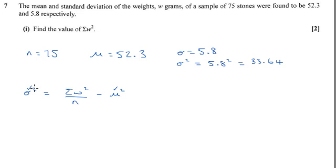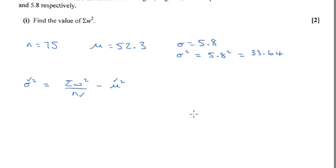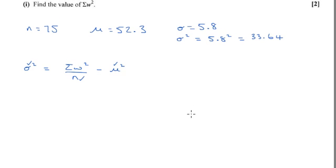The total does this, that's the 33.64, and we know n is 75. So we can work out the sum of w squared if we sub everything into the formula and rearrange it. So that's why it's not as scary as it first seems, as long as you know the formula.